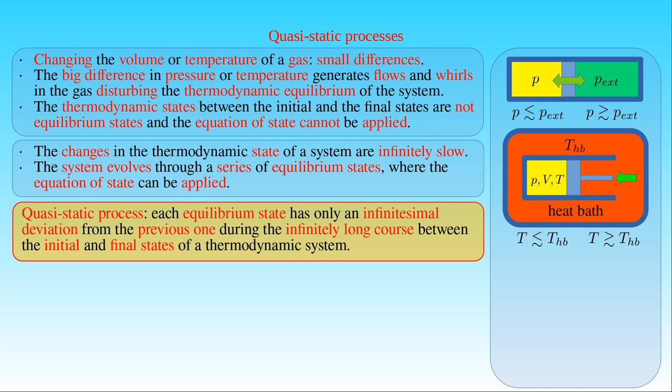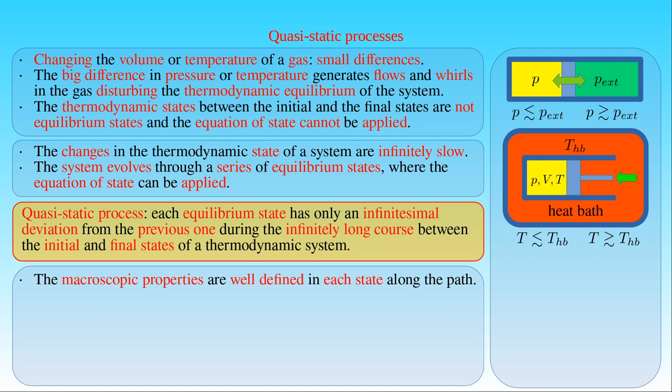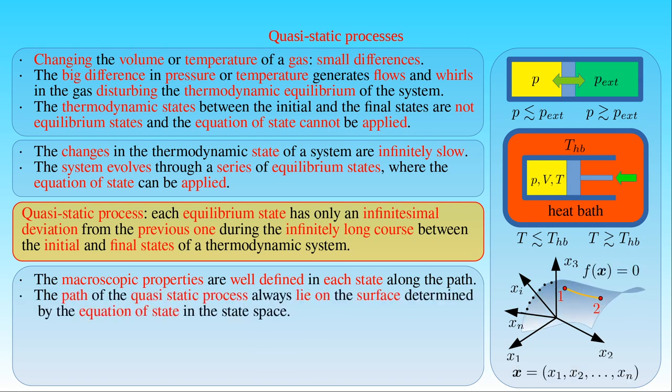In equilibrium, a thermodynamic system has well-defined values of macroscopic properties such as the temperature and the pressure of the system at each instant of the process. Therefore, a quasi-static process is represented by a well-defined path in the state space of the system. The equation of state can also be used to determine the functional relationship between the state variables describing macroscopic properties along the path of the equilibrium states.